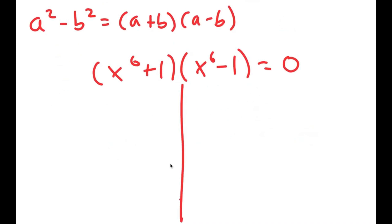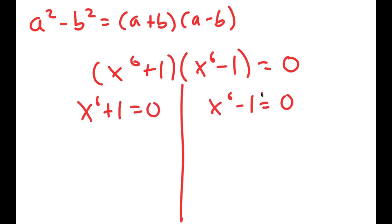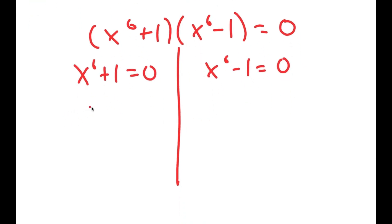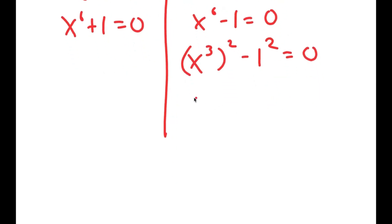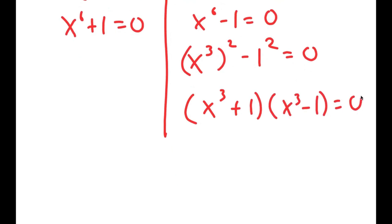This gives me two equations: x to the power of 6 plus 1 equals 0, and x to the power of 6 minus 1 equals 0. I'm going to do the same thing again. I'm going to rewrite x to the power of 6 minus 1 equals 0 as x to the power of 3 squared minus 1 squared is equal to 0. So I can use this property again and get x to the power of 3 plus 1 times x to the power of 3 minus 1 is equal to 0.